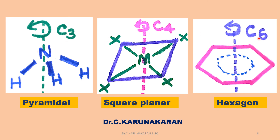Let us consider different molecules and find out the principal axis of symmetry. In ammonia molecule, the geometry is pyramidal — it has one lone pair and possesses pyramidal geometry. C3 is the highest order of axis of symmetry. In a square planar molecule, C4 is the 90 degree rotation and gives a similar configuration — C4 is the principal axis of symmetry. In benzene molecule, it has hexagonal geometry and it has C6 as its principal axis of symmetry.